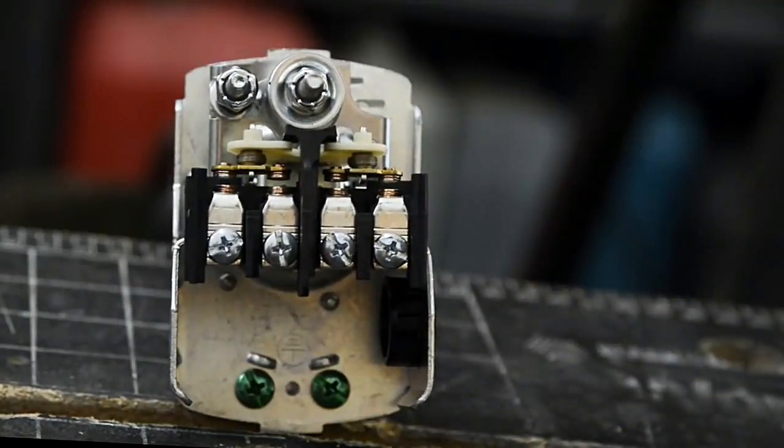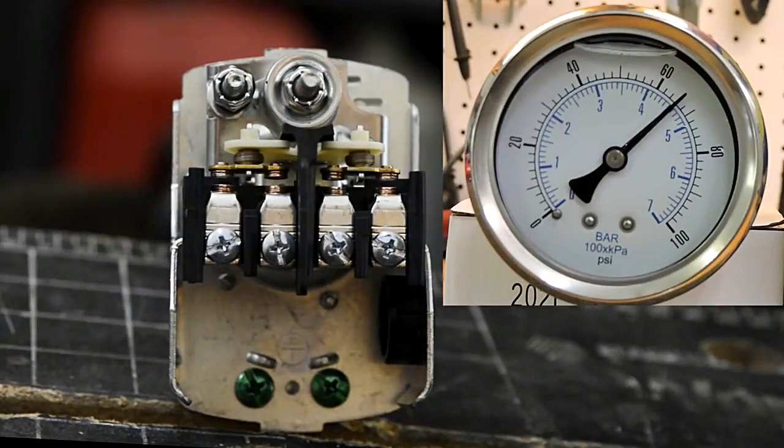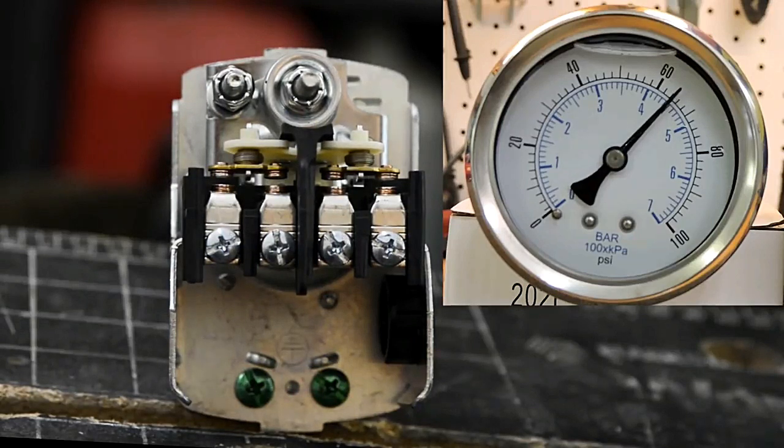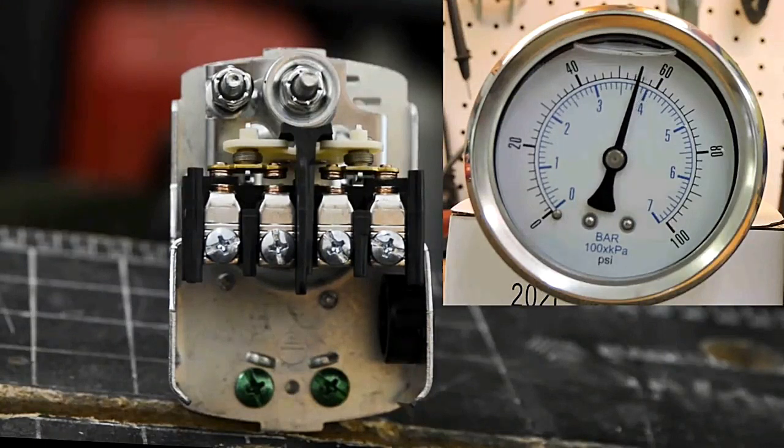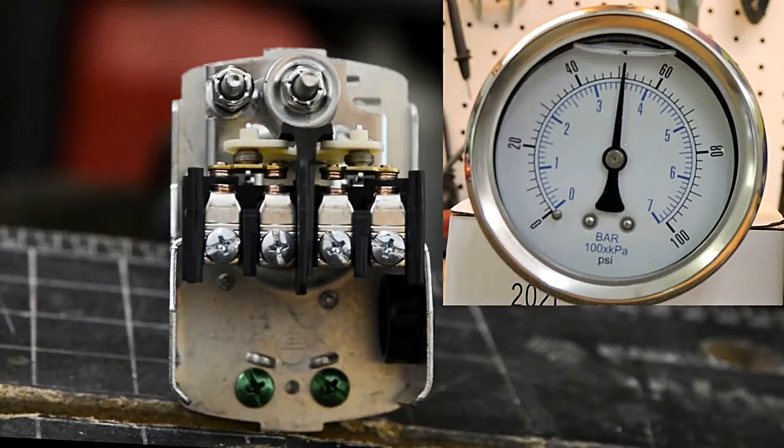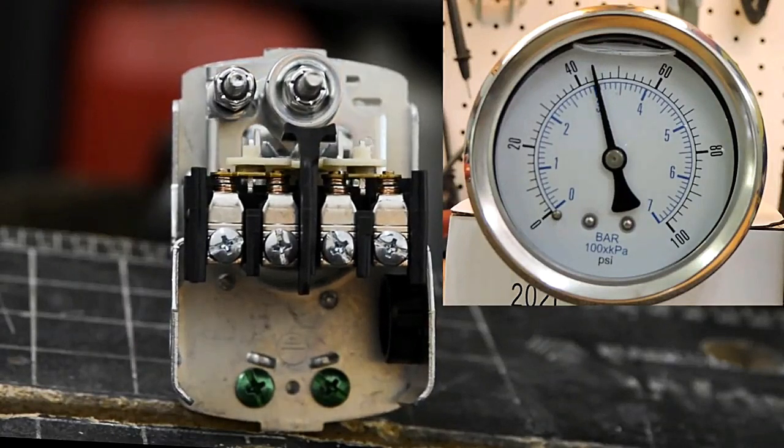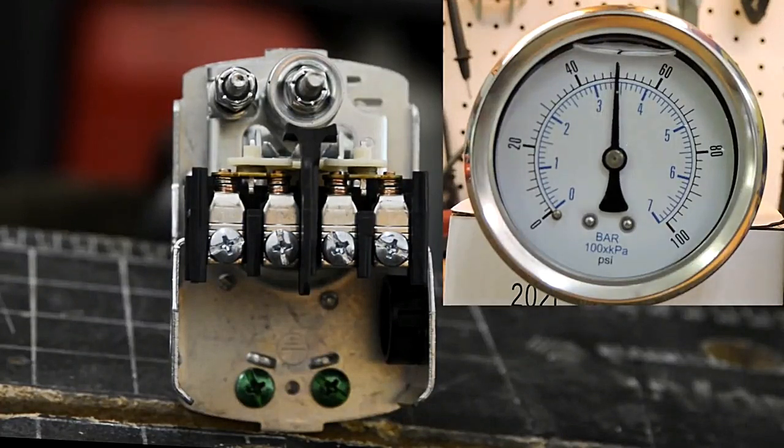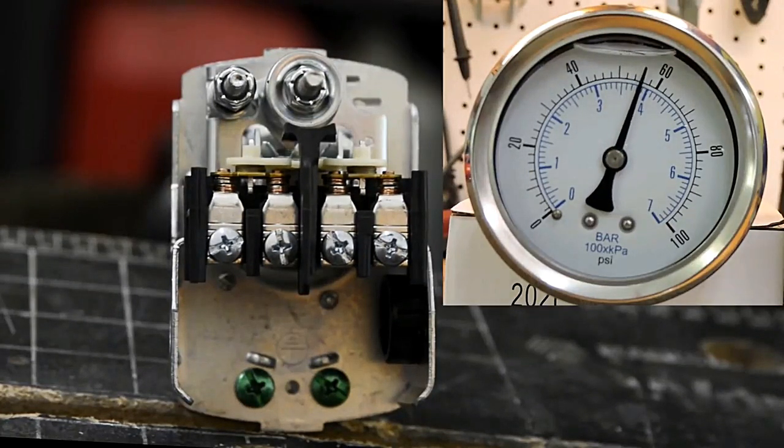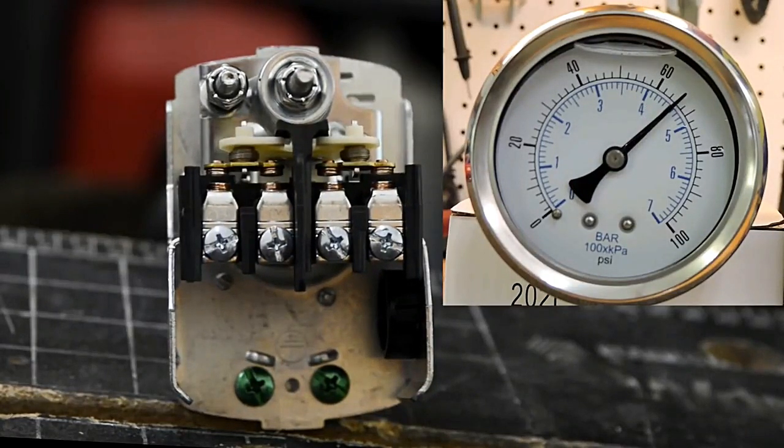We're going to show you the contacts opening. The contacts are open now because the pump will be turned off. The pressure has been satisfied. So as we lose pressure, the contacts will close. Now the pump is running until the pressure is satisfied again. So the pump is running, the pressure is increasing until it reaches the cutoff.